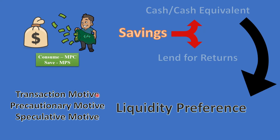The three motives are: transaction motive, precautionary motive, and speculative motive. The transaction motive refers to the need to hold cash for day-to-day transactions. You need readily available cash to carry out daily transactions.